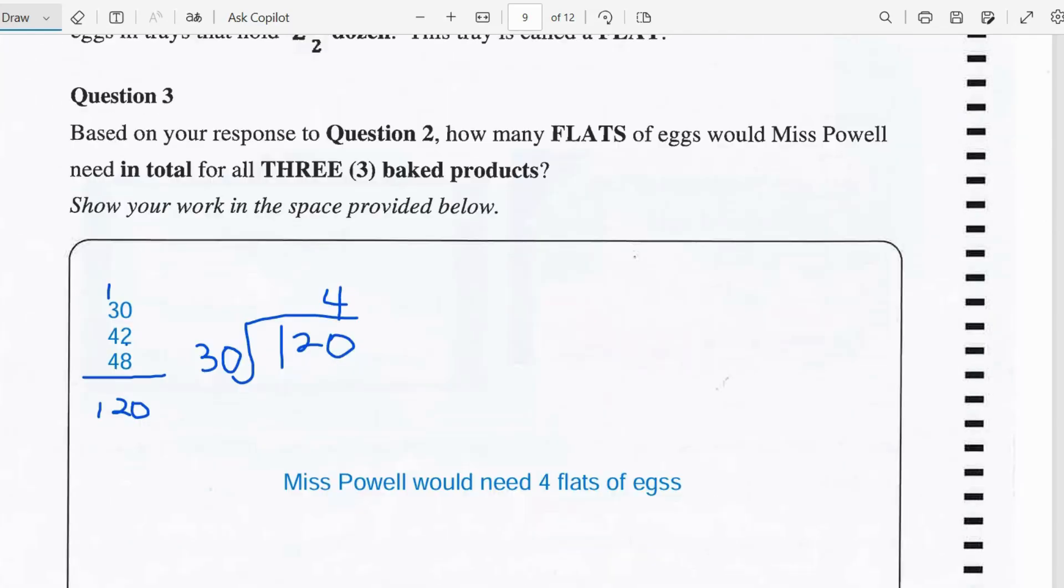So remember that you needed 30 eggs for the bread pudding, 42 eggs for the banana bread, 48 eggs for the spice bun. So we'll add all of those up and then it will give us 120 eggs. And we'll divide 30, which is a flat of eggs, into the total which is 120 eggs, and this goes 4 times. So therefore Miss Powell would need 4 flats of eggs.